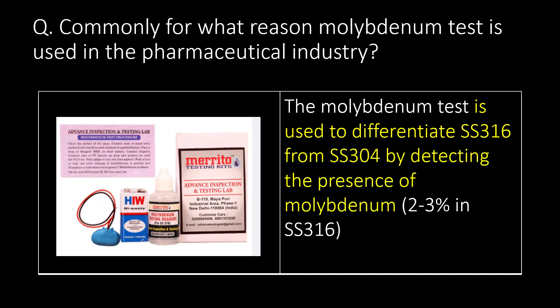Commonly, for what reason is the molybdenum test used in the pharmaceutical industry? The molybdenum test is used to differentiate SS316 from SS304 stainless steel grade by detecting the presence of molybdenum, which is present in 2-3% in SS316 grade.